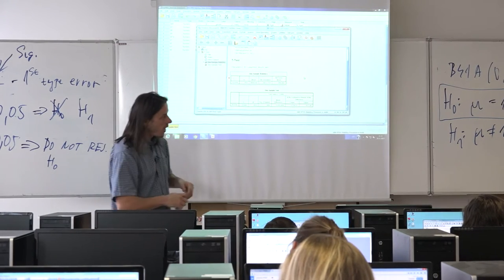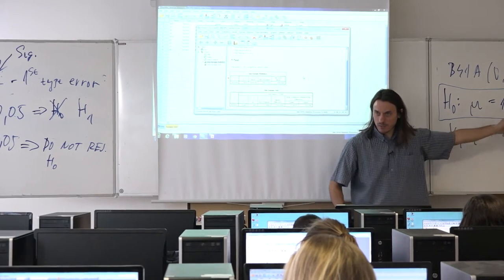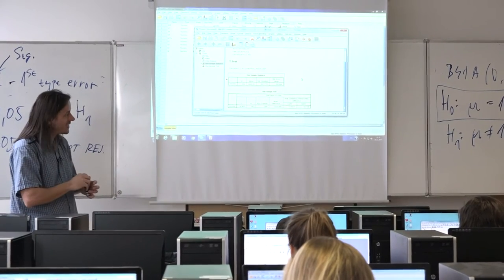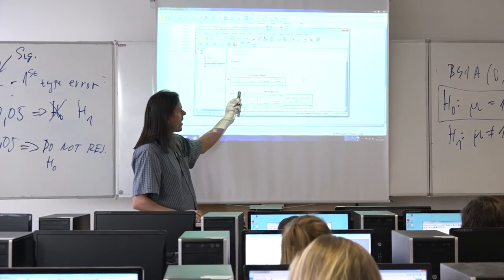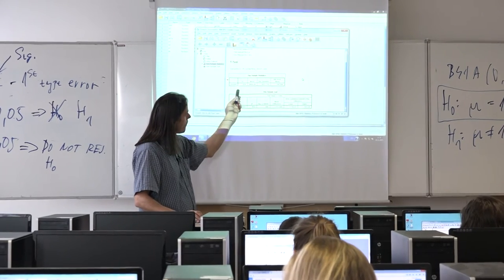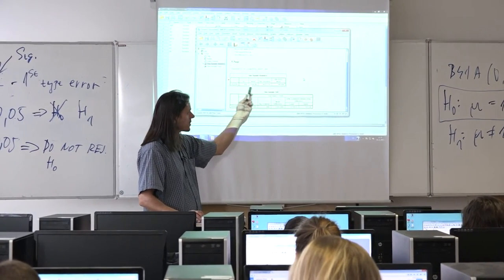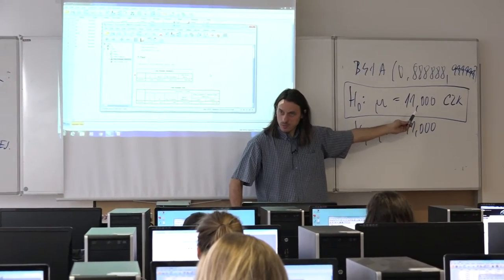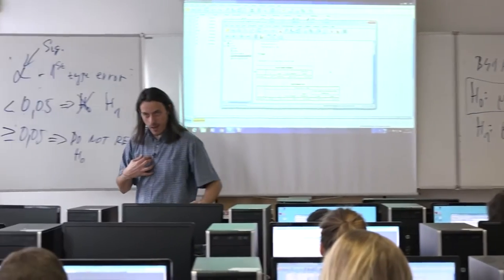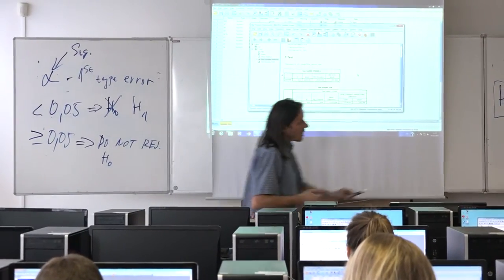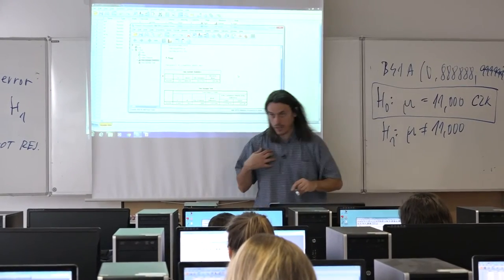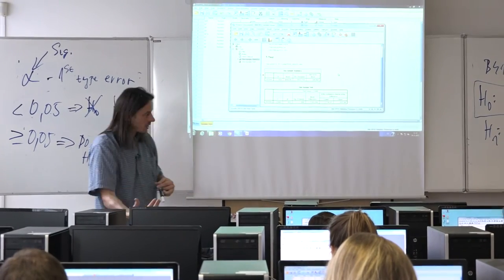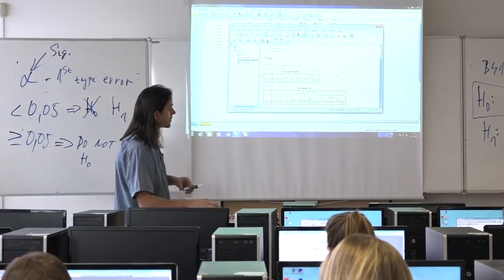This is quite far below the expected level of 11,000. With a large number of respondents and a computed mean below 10,000, we can already expect we will need to reject the null hypothesis. That's a subjective expectation — we will then use the objective statistical testing procedure to confirm.